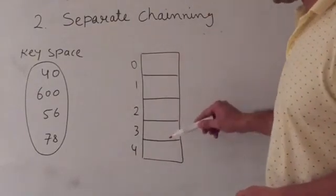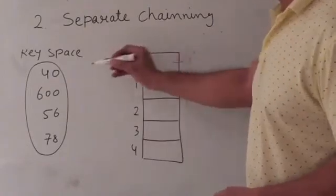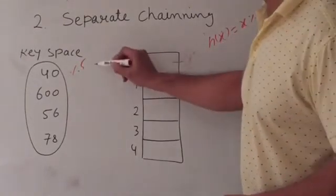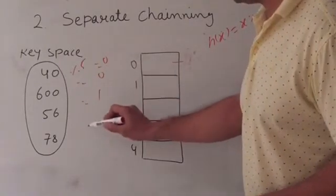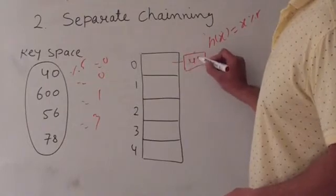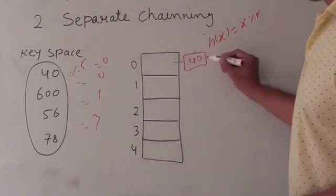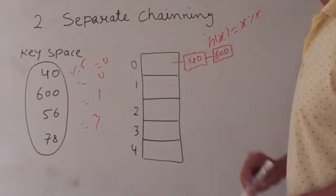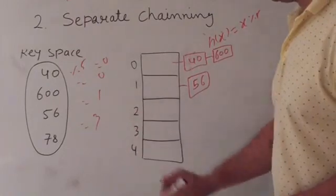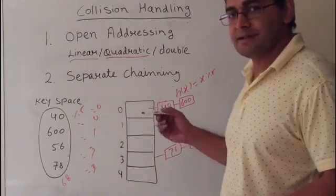For separate chaining, the idea is to use each cell of the hash table to point to a linked list. Given a key space with these keys, we mod by 5 using our hash function f(x) = x mod 5. This results in 0, 0, 1, and 3. So we store 40 at index 0, adding a node and storing 40 there. Then 600 also maps to index 0, so we go to index 0, add a node next to the existing node, and store 600 there. 56 goes to index 1 and is stored directly. 76 goes to index 3. This technique is used when it is unknown how many keys are going to be inserted, deleted, or searched. Cache performance is poor because a linked list is used.